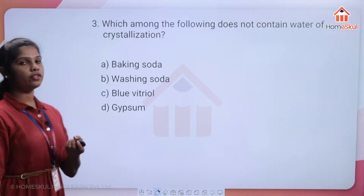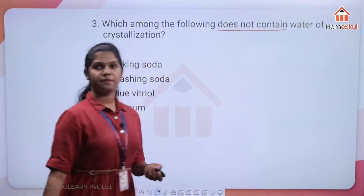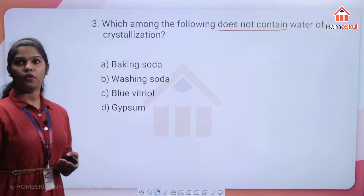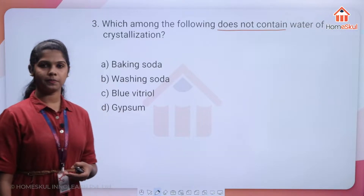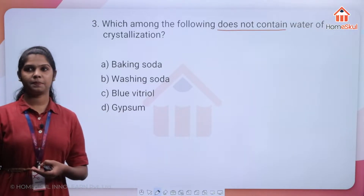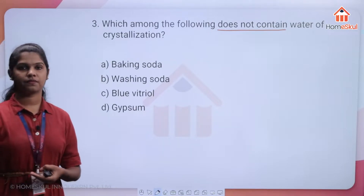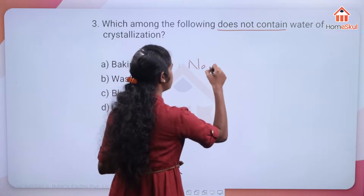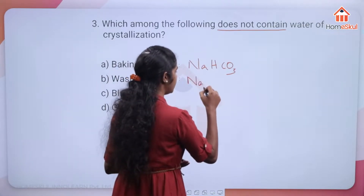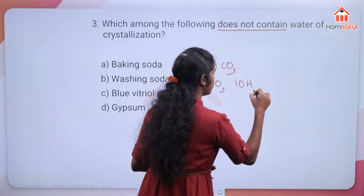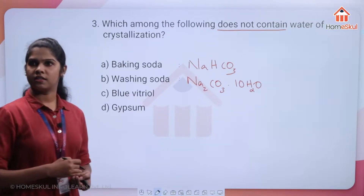Next question: which among the following does not contain water of crystallization? The options are baking soda, washing soda, blue vitriol, and gypsum. The formula of baking soda is NaHCO3, and washing soda is Na2CO3·10H2O.